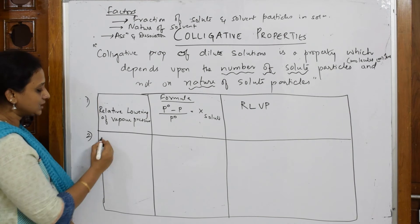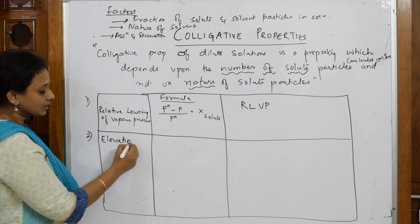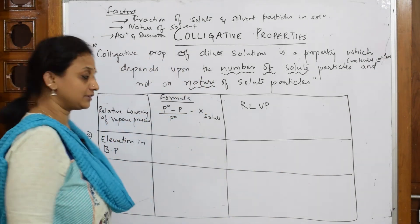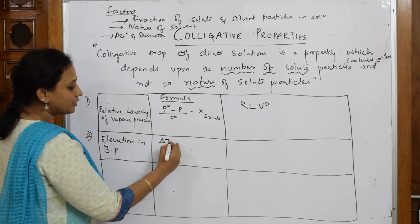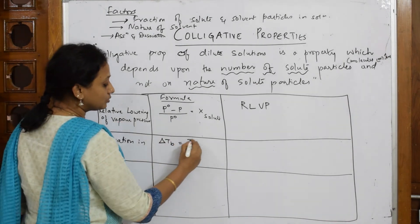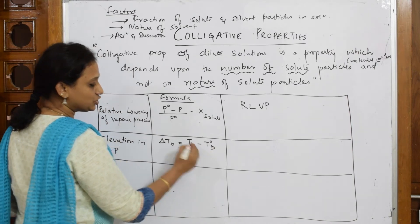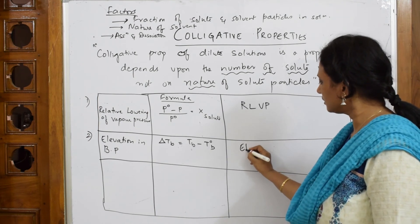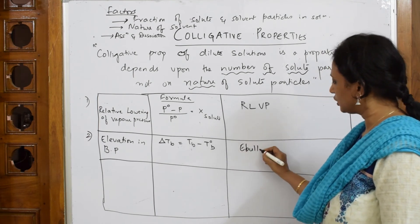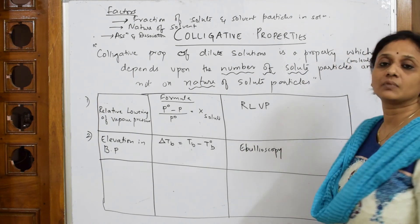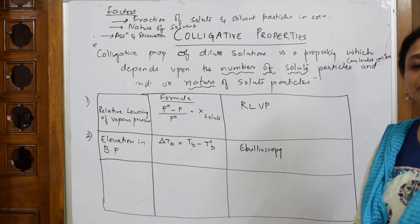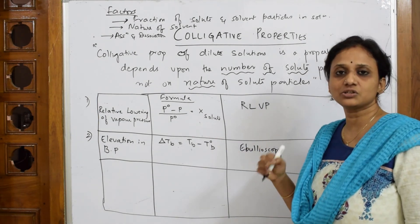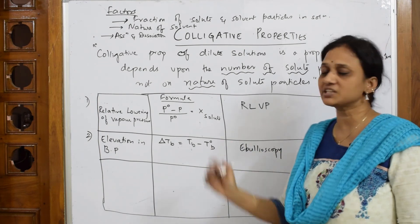Second important thing is elevation in boiling point. The formula for this which we are going to derive is elevation in boiling point, delta Tb, which is equal to Tb minus T0b. I will teach you what it is, how we got this. So here this is also called ebullioscopy. If they ask you to explain the concept of ebullioscopy, that means they want you to explain about elevation in boiling point.